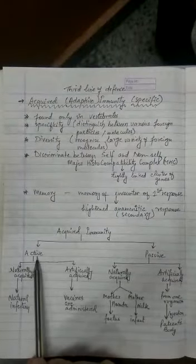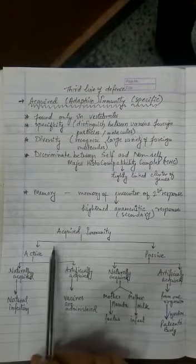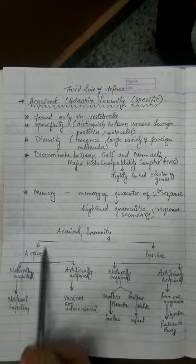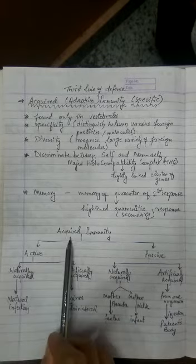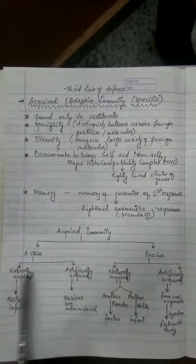So the active immunity which a person develops in his own life is called as actively acquired immunity, and there are two methods to obtain it.